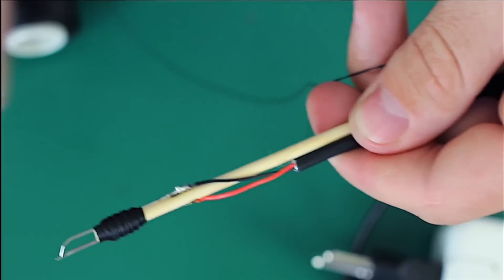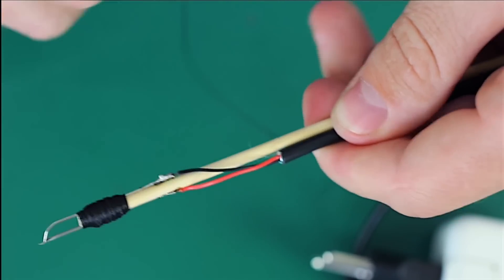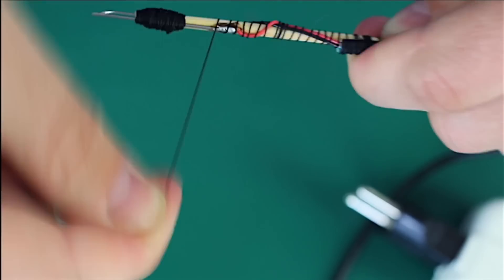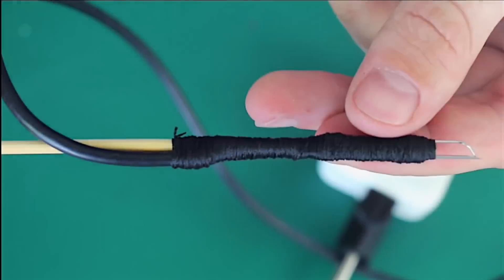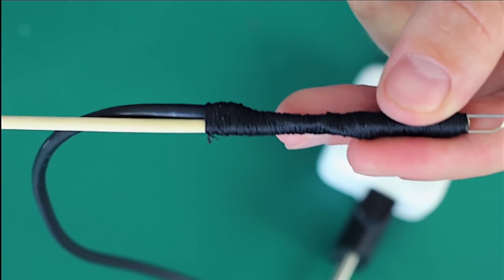Then attach the wires to the stick and completely cover them with threads. Cut off the loose end of the wooden stick.